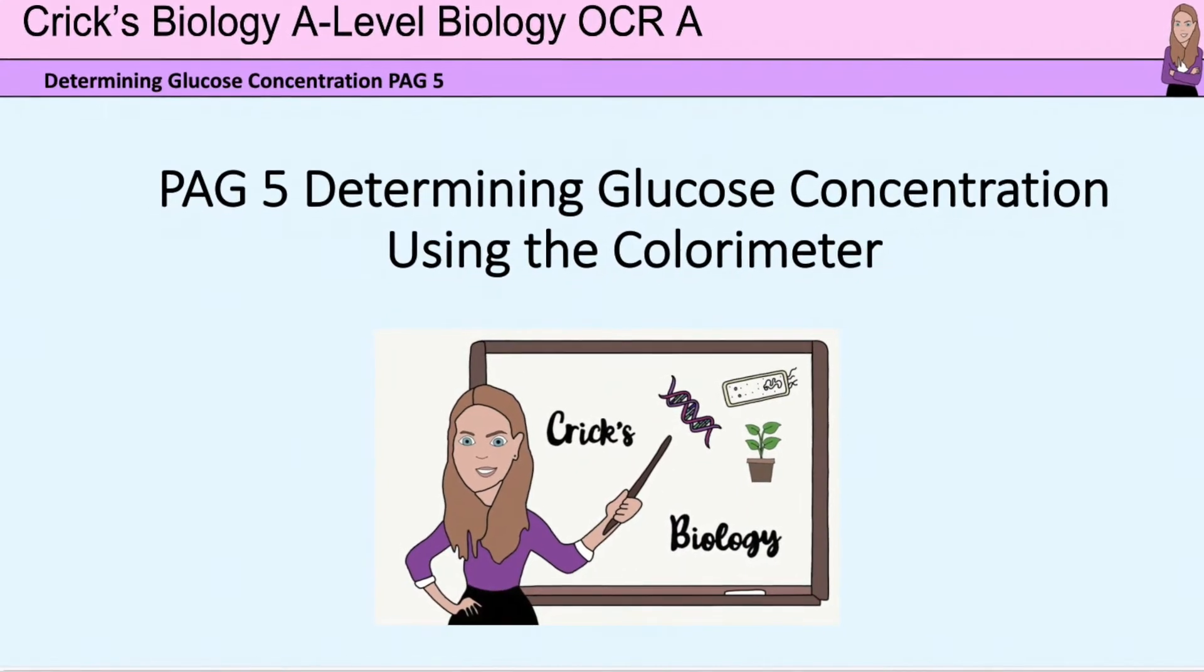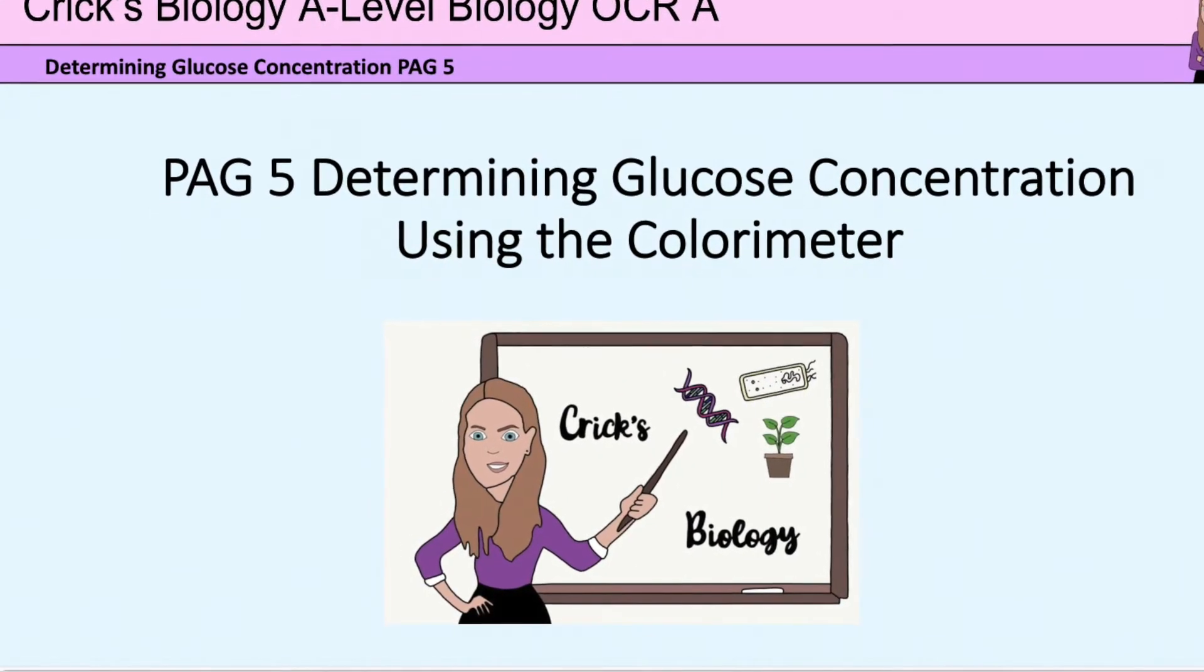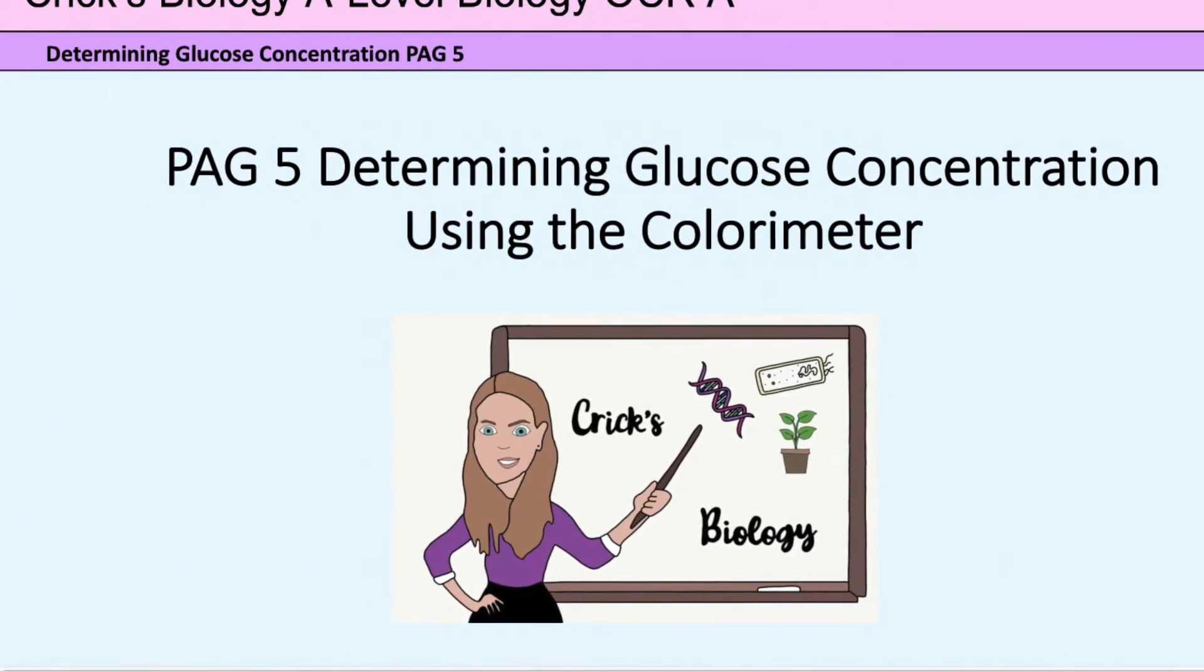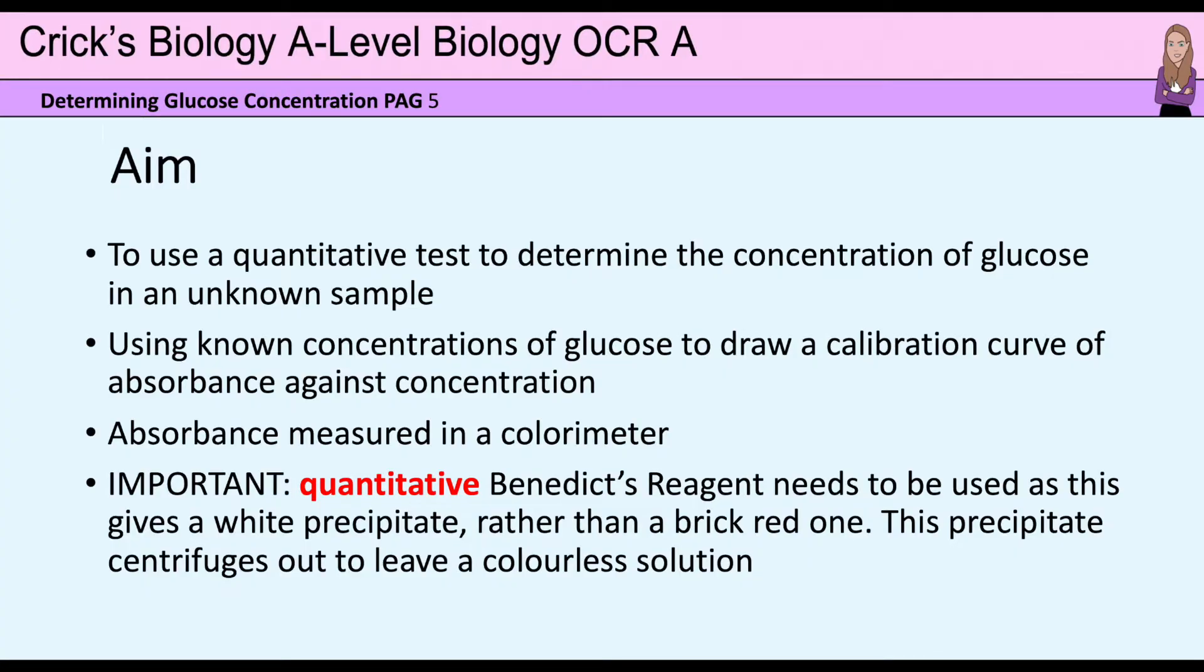Welcome to my lesson to explain PAG 5, determining glucose concentration using the colorimeter. The aim of this experiment is to use a quantitative test to determine the concentration of glucose in an unknown sample X.